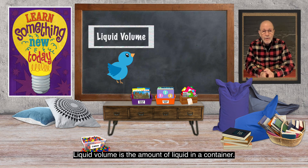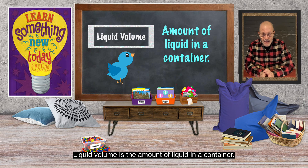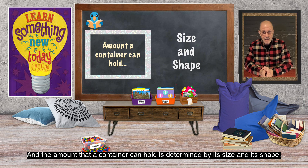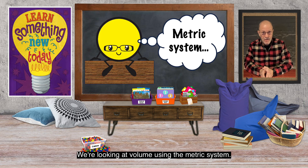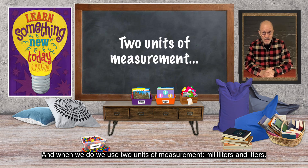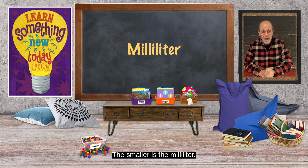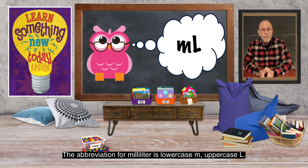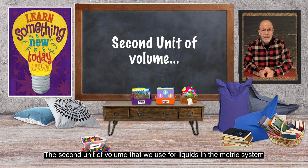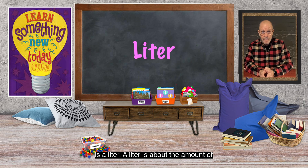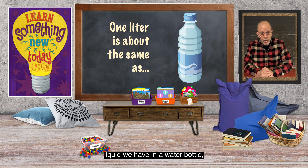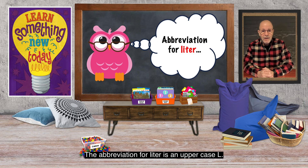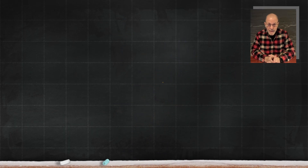Let's review what we've learned. Liquid volume is the amount of liquid in a container. Capacity is how much liquid a container can hold, determined by its size and shape. We look at volume using the metric system, using two units of measurement: milliliters and liters. The smaller unit is the milliliter — about 20 drops from a medicine dropper — abbreviated as lowercase m, uppercase L. The second unit is the liter, about the amount of liquid in a water bottle, or very close to one quart in the standard system, abbreviated as uppercase L.